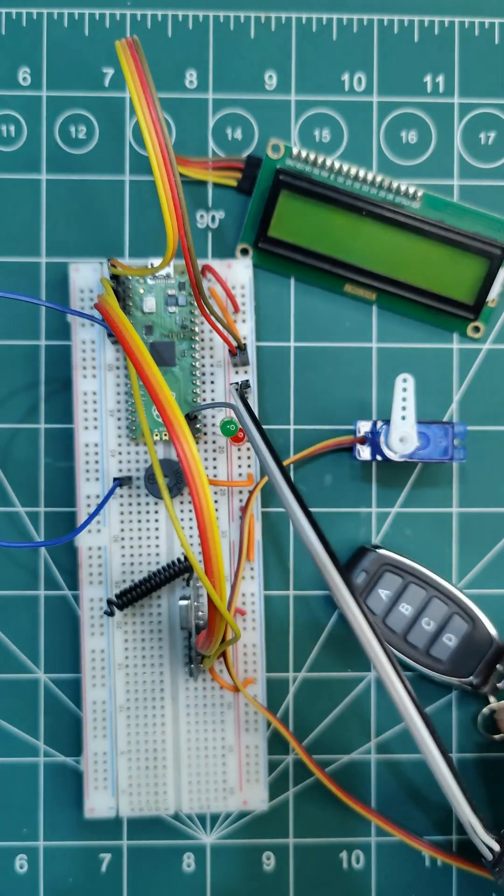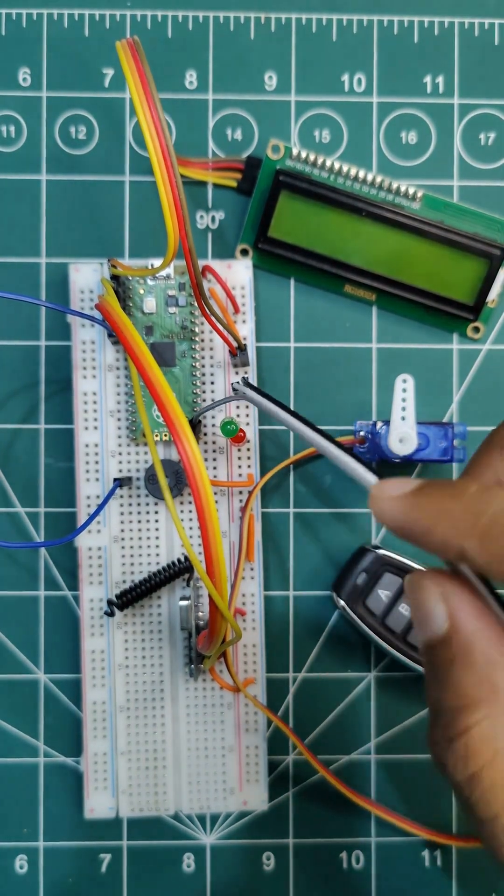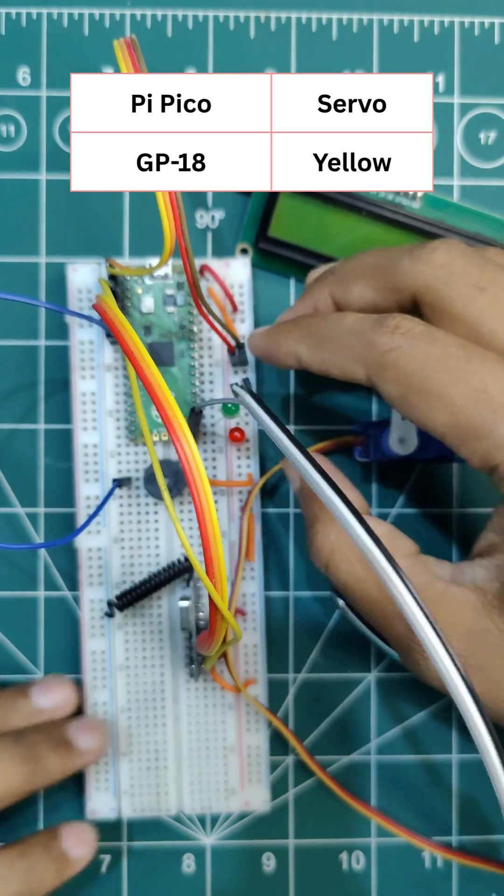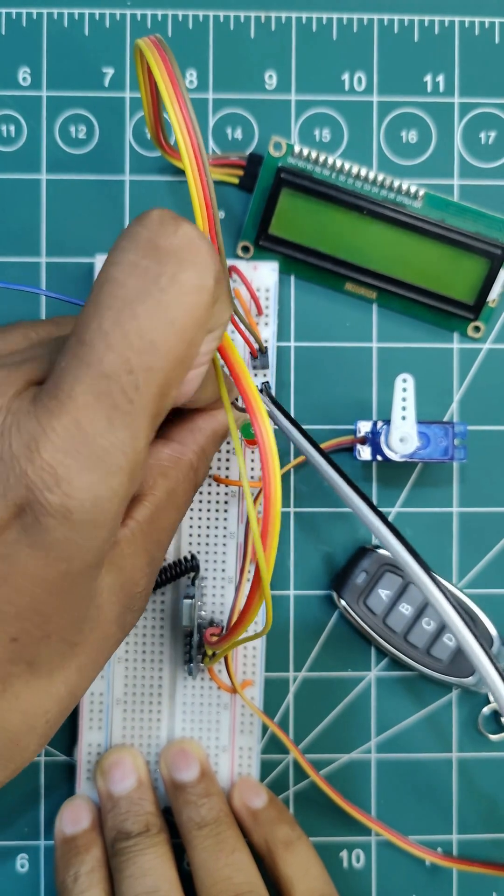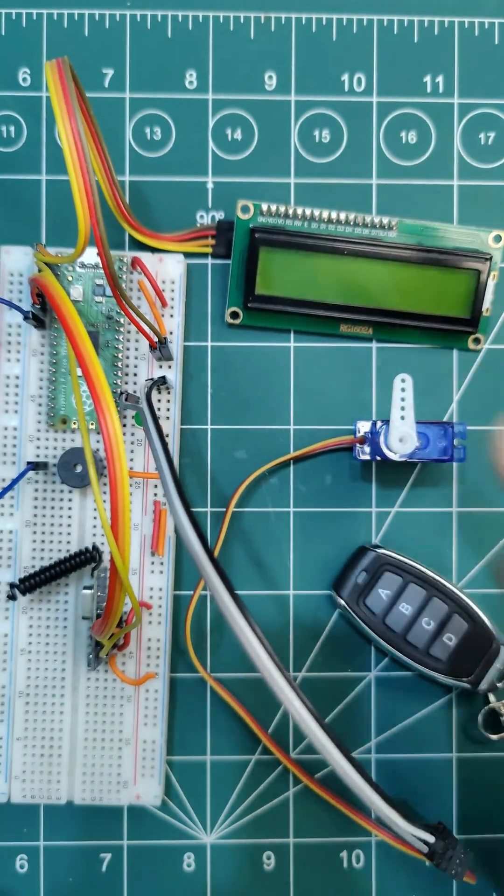This is the positive negative. And I have connected the servo to GP18. So here we have GP18 pin. And our project is ready.